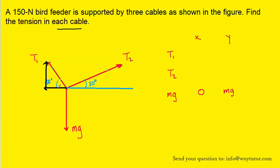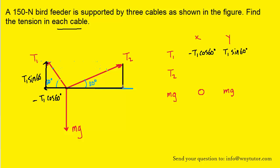The x component of T1 is T1 times cosine of 60, and the y component is T1 times sine of 60. When we fill in the x component, we assign a negative sign because it's pointing to the left. T1 sine 60 is pointing upward, so that's positive. Similarly, T2 has an x component of T2 cosine 30 pointing to the right (positive direction) and a y component of T2 sine 30 pointing upward (also positive).